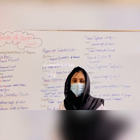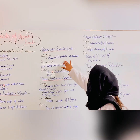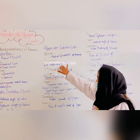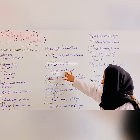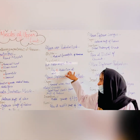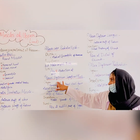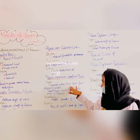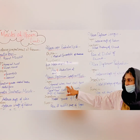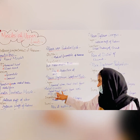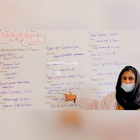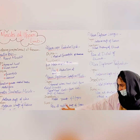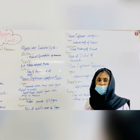The third muscle is flexor carpi radialis. Its origin is the medial epicondyle of the humerus, and it inserts at the base of the second and third metacarpal bones. Its function is flexion and adduction at the wrist. The fourth muscle is flexor digitorum superficialis. Its humero-ulnar head starts from the medial epicondyle and the radial head from the anterior shaft of the radius. Its insertion is the middle phalanx of the four fingers, and its function is flexion at the middle phalanges.